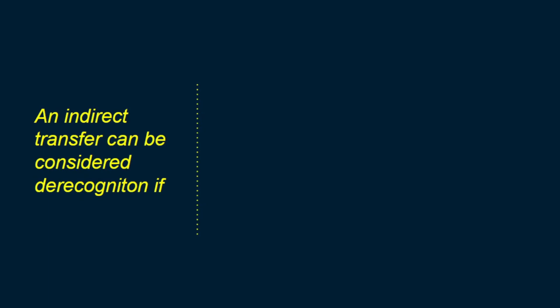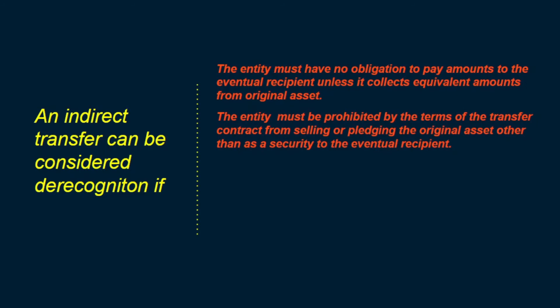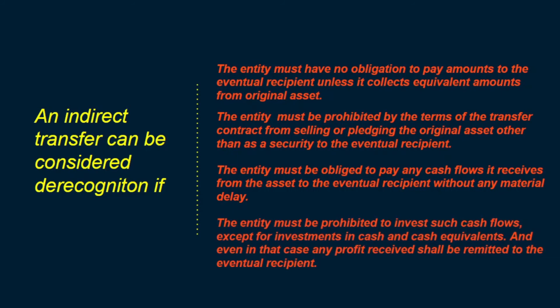For type X transfer — the indirect case — the following conditions must be true for the transfer to be considered a de-recognition. First, the entity must have no obligation to pay amounts to the eventual recipient unless it collects equivalent amounts from the original asset, meaning there should be no guarantee to pay any amount on its own. Second, the entity must be prohibited by the transfer contract from selling or pledging the original asset other than as security to the eventual recipient. Third, the entity must be obliged to pay any cash flows it collects to the eventual recipient without material delay. Finally, the entity must be prohibited from investing such cash flows except in cash and cash equivalents, and even then, any profit from that investment must be remitted to the eventual recipient.